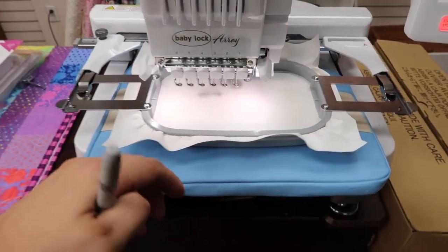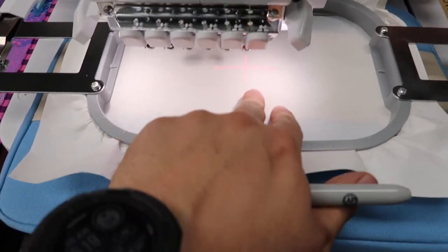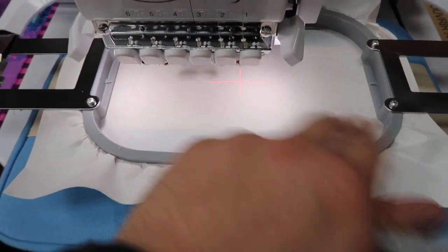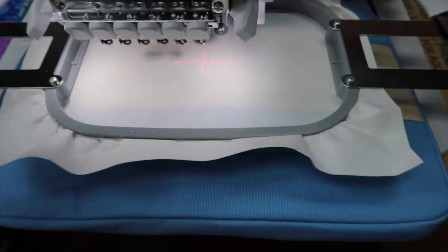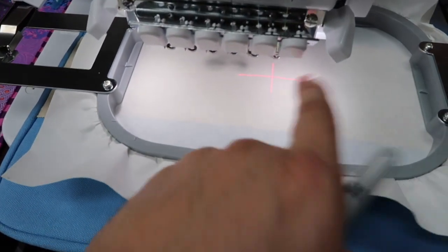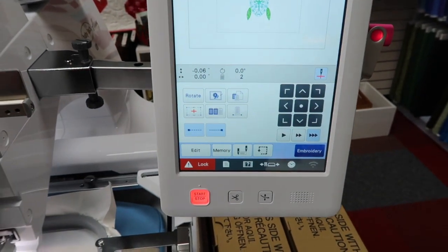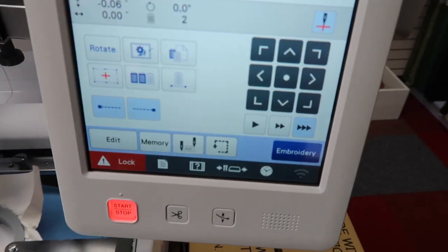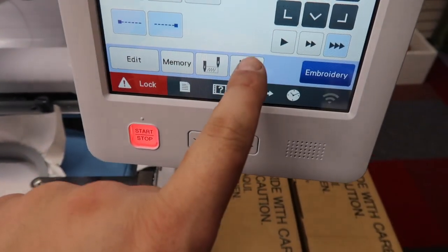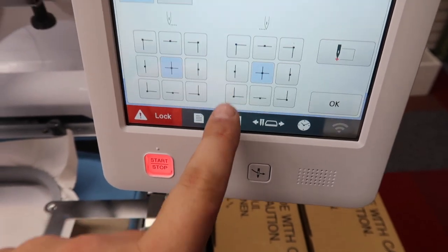So once you get it loaded on your machine here, go ahead and line it up. If you have a machine with a laser, use your laser. If you don't, line it up however you prefer to do it. If you've got like the Array, use your crosshairs to get that lined up for you. Get to this point in your design where you can check your area. The way I like to do it, as opposed to using this trial button here, I use this button.